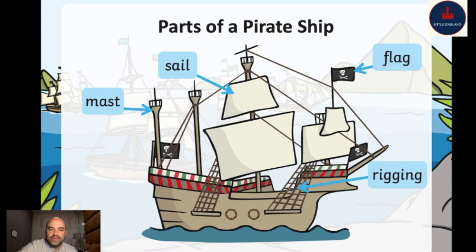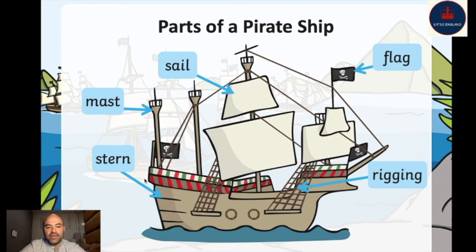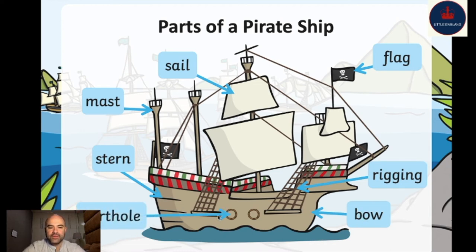This rope that makes a checkered pattern is called rigging. This ship has two rigging. The back of the boat is called the stern. The front of the ship is called the bow. And these circles or holes are called portholes. So to review: flag, rigging, bow, porthole, stern, mast, and sails.